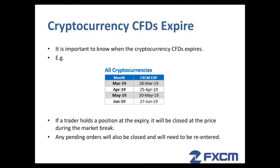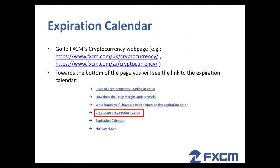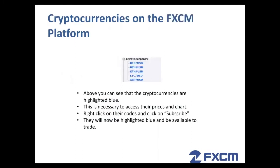If you're choosing to trade cryptocurrencies, please understand that the CFDs do expire. If a trader holds a position at the expiry, it will be closed at the price during the market break, and any pending orders will also be closed and will need to be re-entered. There is an expiration calendar — go to FXCM's cryptocurrency web page and you'll see towards the bottom of the page a link to the expiration calendar. I have highlighted it with the red rectangle. Just click on that cryptocurrency product guide link.